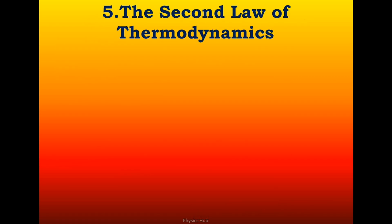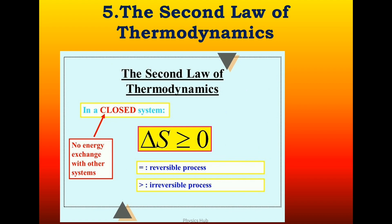The fifth equation is the second law of thermodynamics. The second law of thermodynamics states that the total entropy of an isolated system can never decrease over time. Mathematically, you can say delta S greater than or equal to zero, where delta S is the change in entropy. For reversible processes, the equal sign holds, and for irreversible processes, the greater than sign holds.